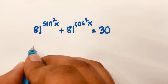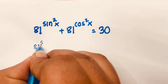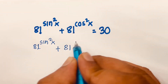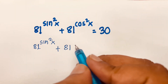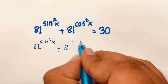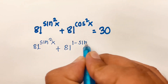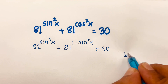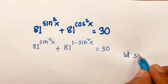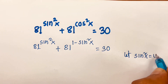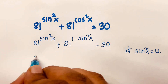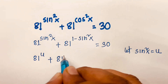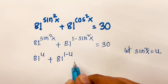So first of all, here is 81 power sine squared x plus 81. We know that cos squared x is equal to 1 minus sine squared x, so it will be 81 power 1 minus sine squared x, and the sum is equal to 30. Then let sine squared x equal to u. This gives us 81 power u plus 81 power 1 minus u is equal to 30.